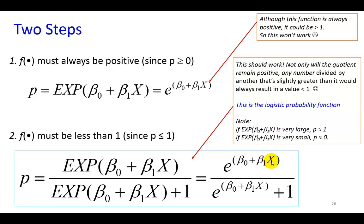So, pursuant to that, I show here the logistic probability function with one explanatory variable. It can be represented using the EXP notation, or using the more formal exponential notation, as I show here. Now, as you can see, this expression satisfies our two conditions. Not only will the quotient, which is the whole term, remain positive, since the exponent of any number, negative or positive, is always positive. But also, any number divided by another that's slightly greater than it would always result in a value of less than 1.